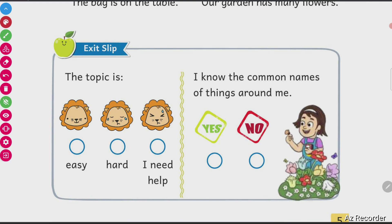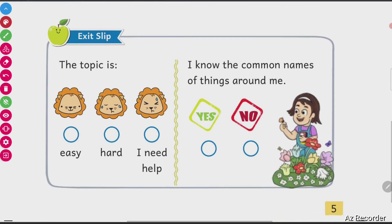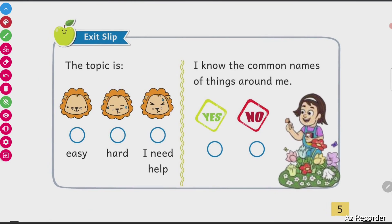So this topic was easy or hard? If you need help, you will watch this video again. If it's easy, write easy in the comment. If it's hard, write hard in the comment. I know the common names of things around me — do you now know the common names for the things around you? If yes, write yes in the comment. If no, write no in the comment.